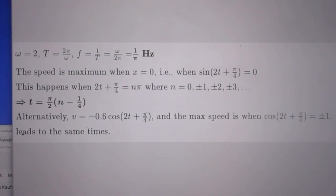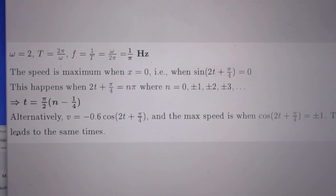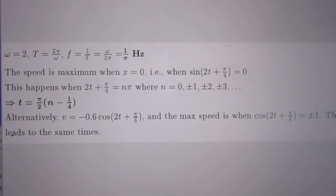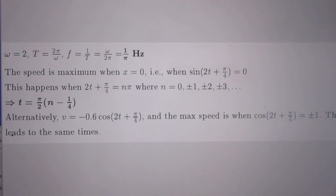So here you see the solutions. Clearly ω is 2 and since the period is 2π divided by ω and the frequency is 1 over T which is ω divided by 2π. So the frequency in hertz is 1 over π. Piece of cake.